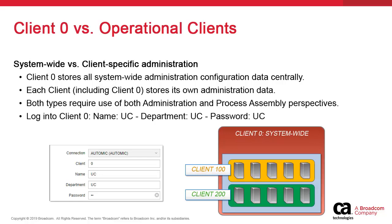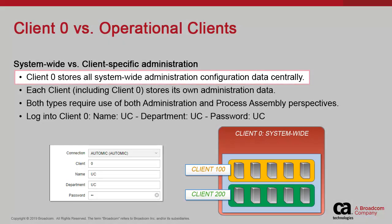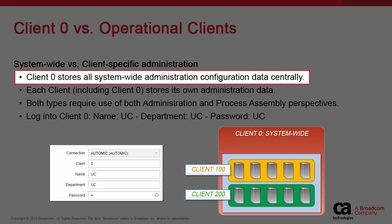One important aspect of administration is the role of clients. Atomic Automation offers the ability to be subdivided into multiple distinct environments, called clients, with assigned numbers. Client 0 is the administrative client. System-wide configuration is stored here, and then distributed to other clients.